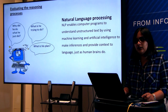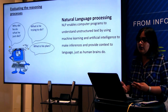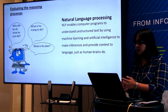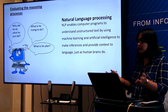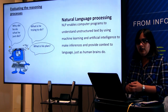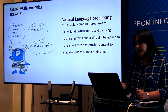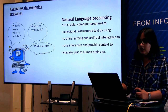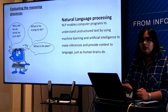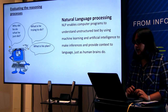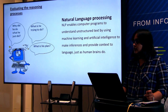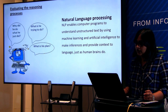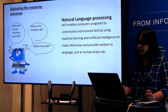Natural language processing: Schank introduced the concept of NLP in this. NLP helps a lot in reasoning these processes. NLP enables computer programs to understand unstructured text by using machine learning and artificial intelligence. By that we can make inferences and provide context to the language, just as human brains do.